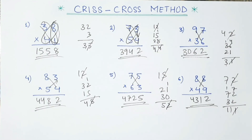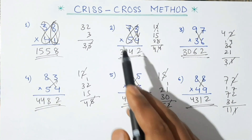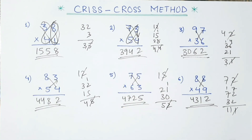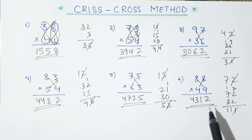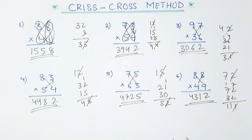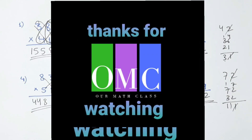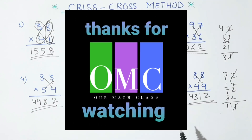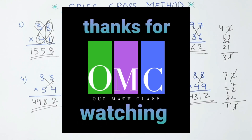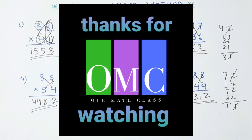By using this crisscross method we can multiply any two-digit number within a few seconds and just in one line. This is all for today. We will come up with such amazing calculation tricks in our next video, so till then keep practicing and keep watching. Thank you very much.